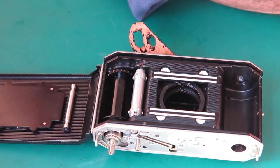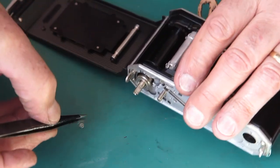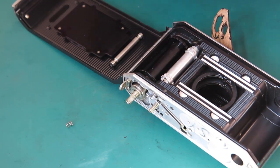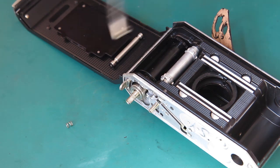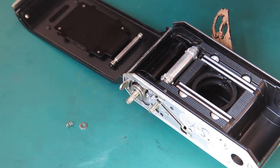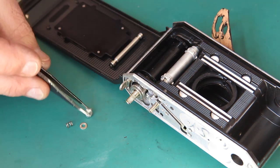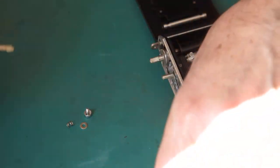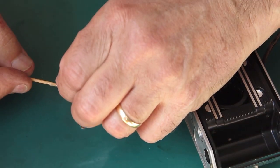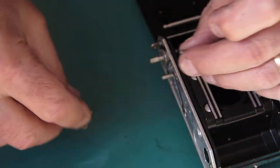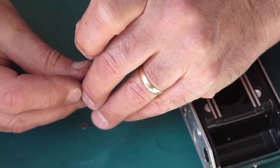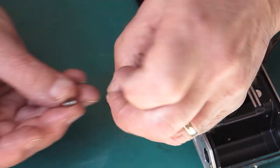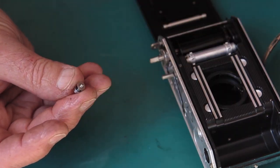The rewind button can go in place. I've got its return spring, its washer, and the rewind button. Normally I just put a little bit of synthetic grease on the spring. Put that over the button. Put the washer over the end of the button.